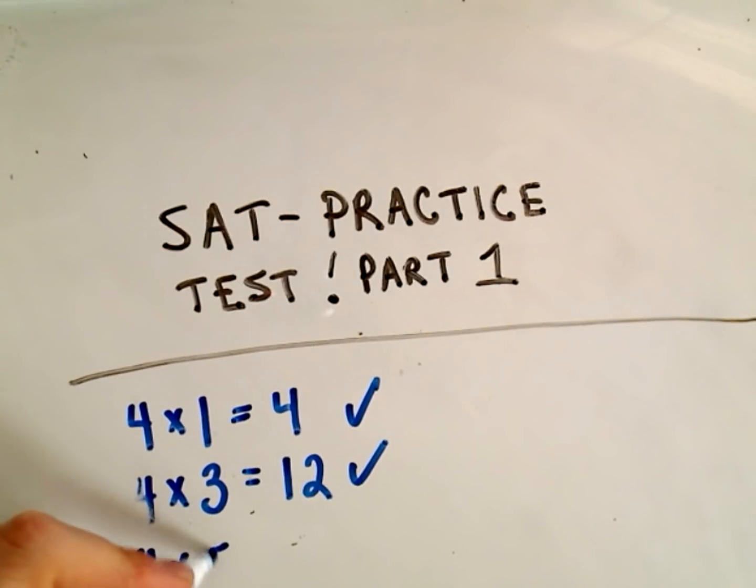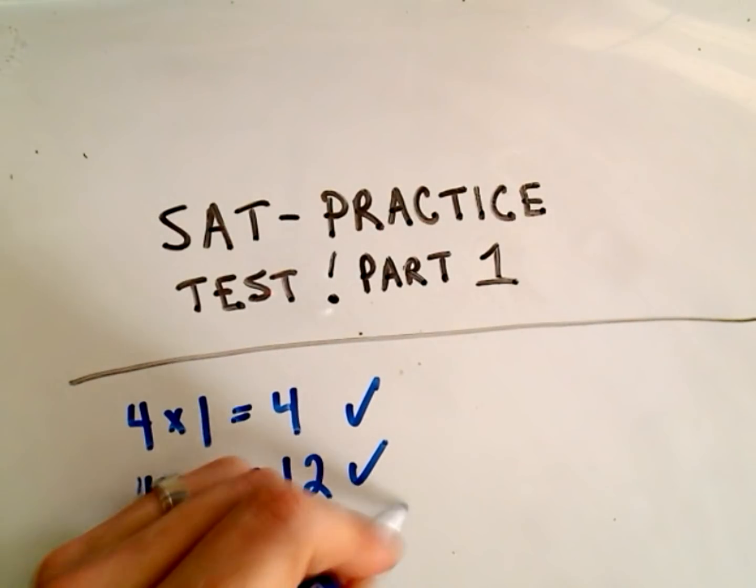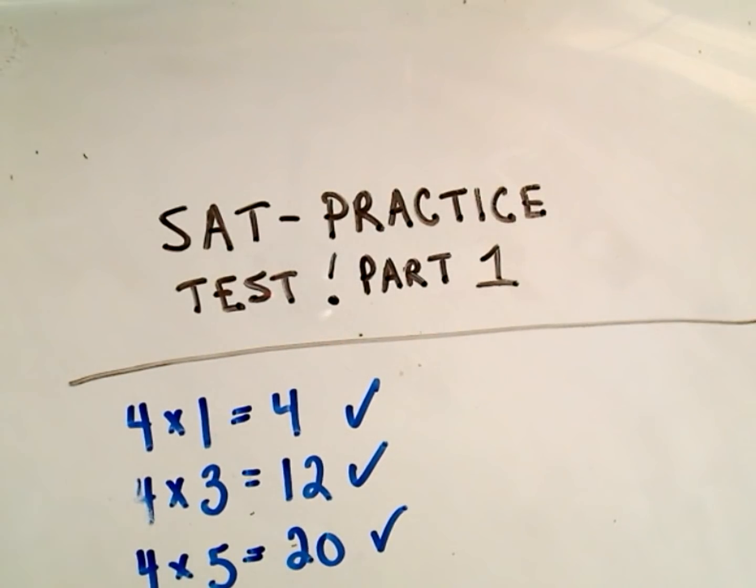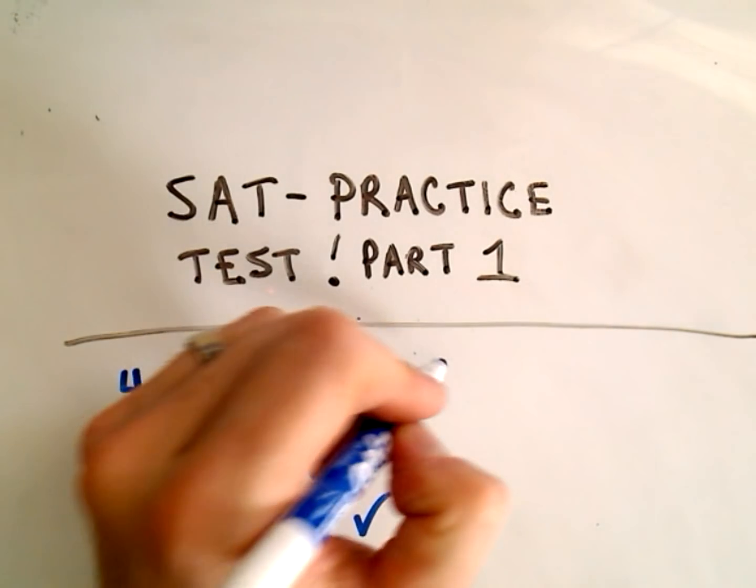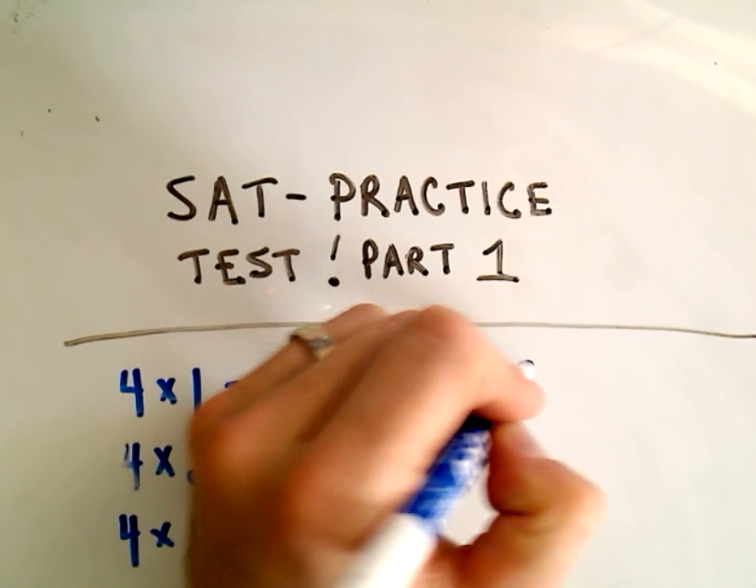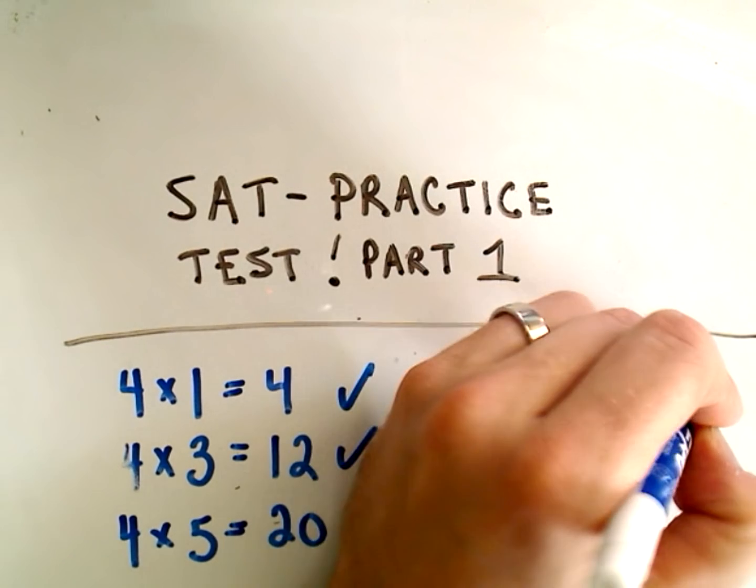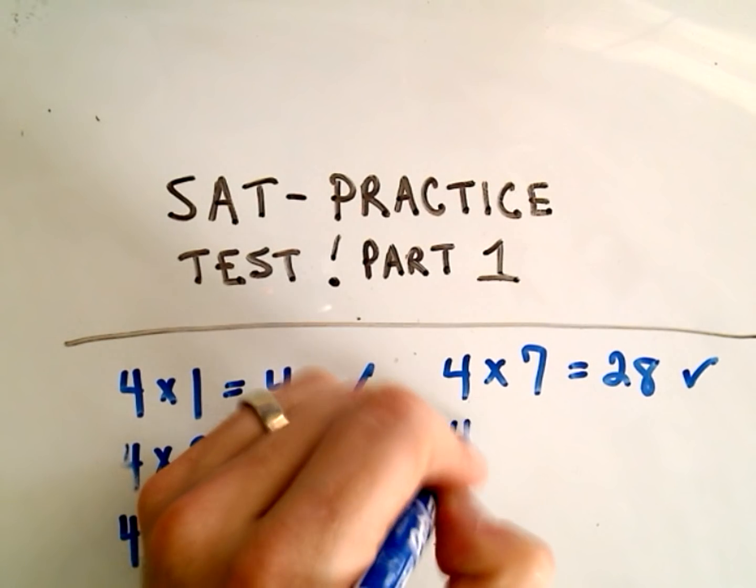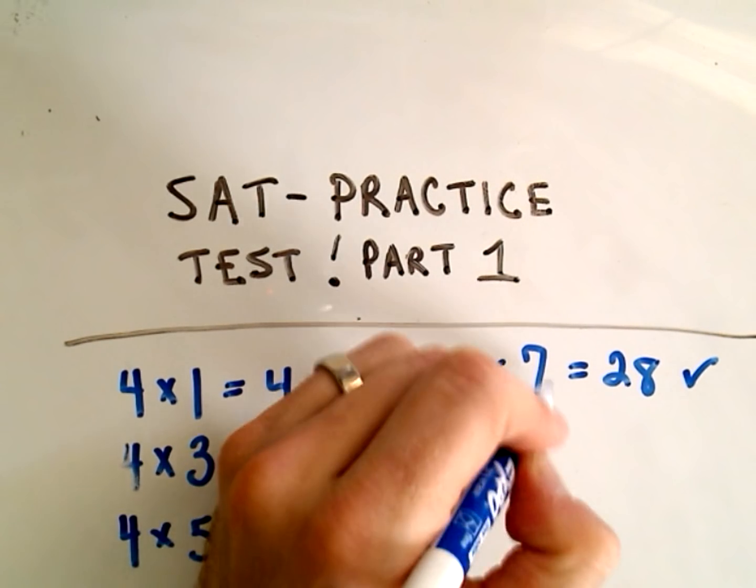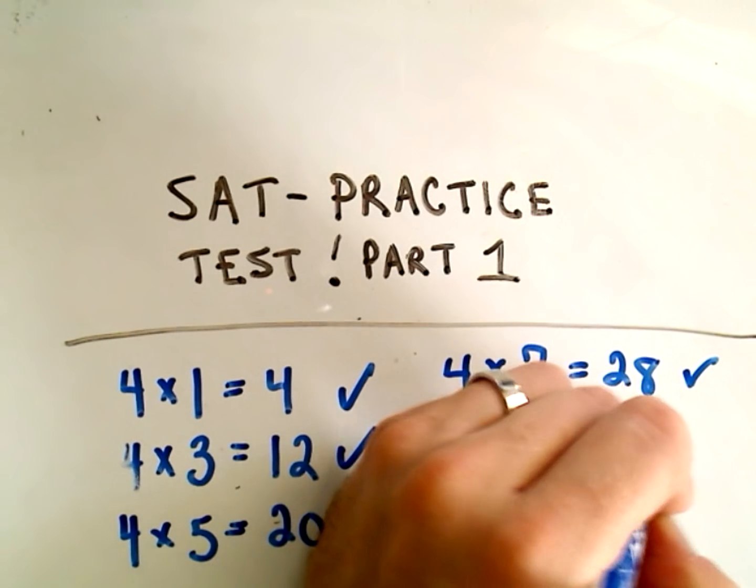The next odd number after 3 is 5, that gives us 20, so that's smaller than 36. The next number we could try, odd, would be 7, which is 28, that's certainly less than 36. The next odd number would be 9, which actually gives us 36.